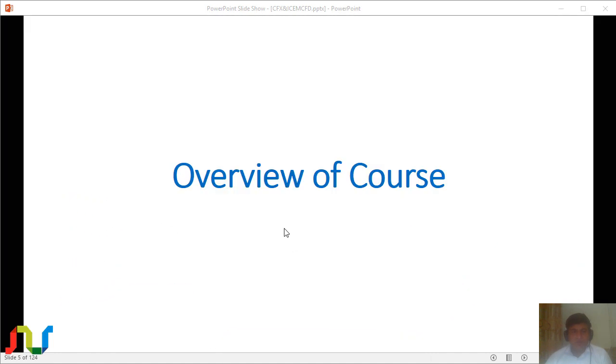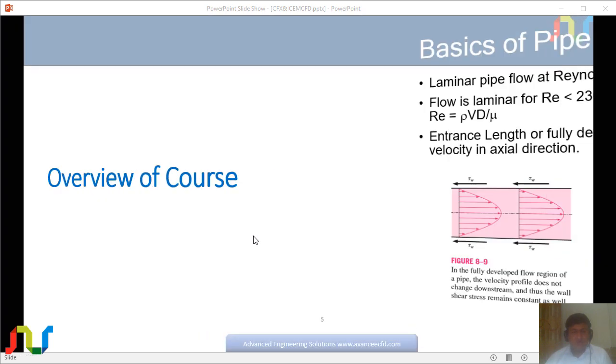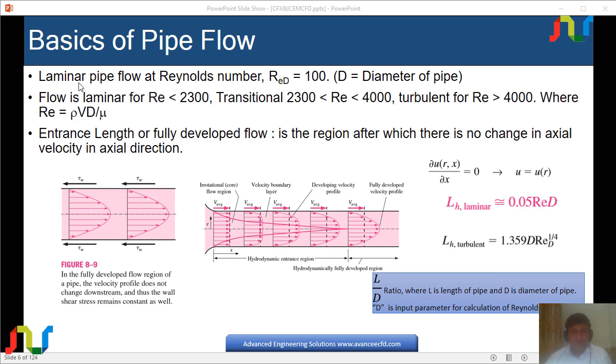In the first part, we will have an overview of the course. For pipe flow, the flow is laminar because the Reynolds number based on diameter is 100. As we know, flow is laminar for pipe flow when Reynolds number is less than 2300, transitional between 2300 and 4000, and turbulent for Re > 4000. The formula for Reynolds number is Re = ρVD/μ.